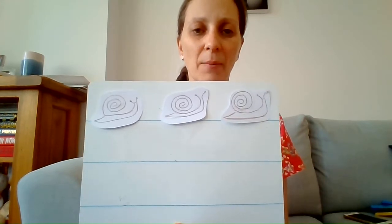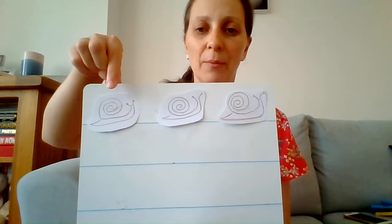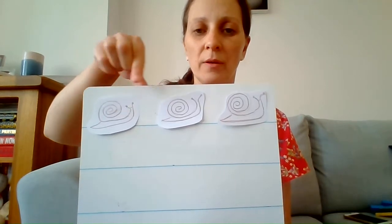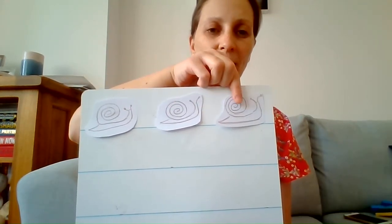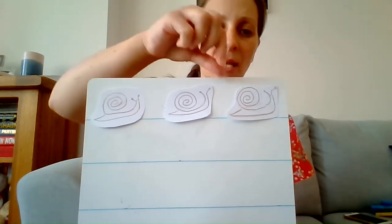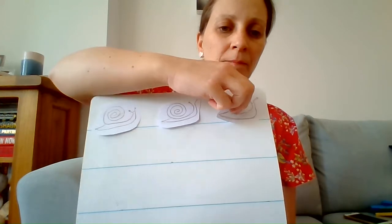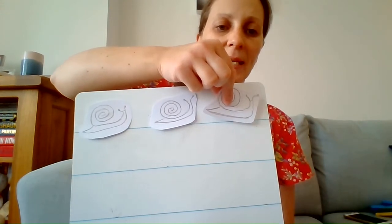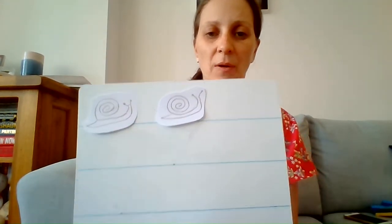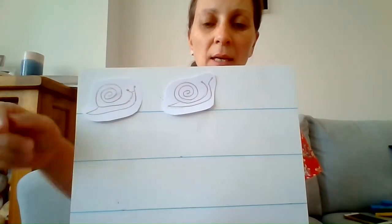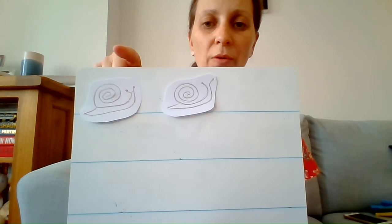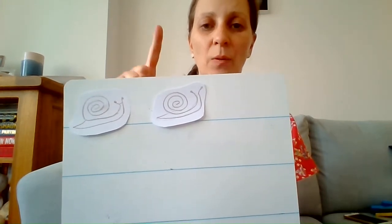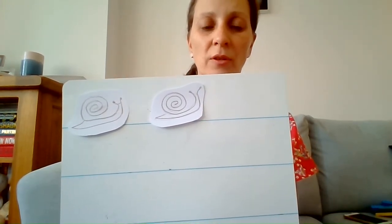I suggest starting with really small numbers for takeaway. First, count how many there are at the beginning. Here I have some snails — how many have I got? We're going to count from left to right and touch them as we count: one, two, three. Three snails altogether. If I take one snail away, how many do I have now? Remember, subtracting means taking it away. Off it goes — he's gone. So three takeaway one equals two.